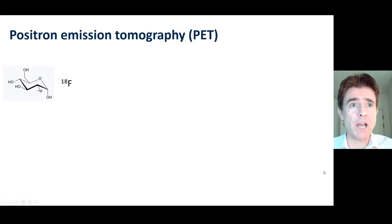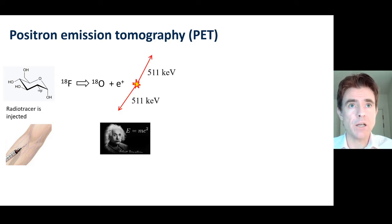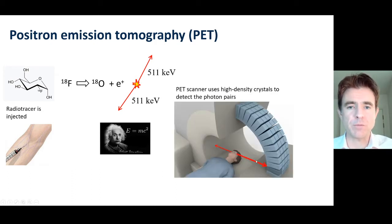In PET imaging we have, for example, an F18 labelled compound such as fluorodeoxyglucose that's injected into the subject. The fluorine-18 will decay to oxygen-18 with release of two back-to-back photon pairs which arise from annihilation of the positron with any surrounding electron by E equals mc squared—conversion of the rest mass energy of the electron and positron. Those back-to-back photon pairs are detected by a PET scanner.